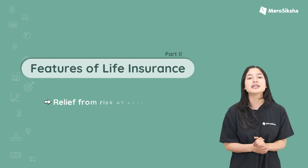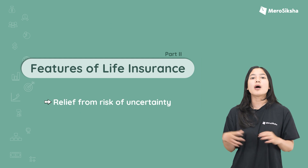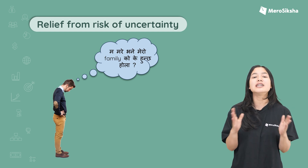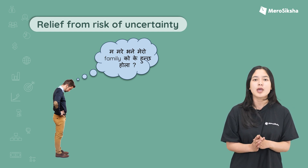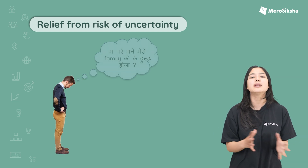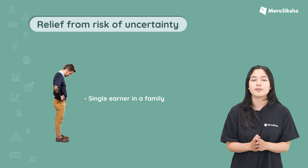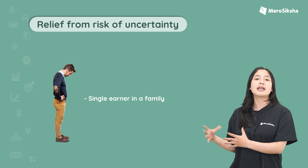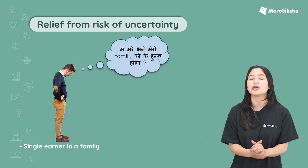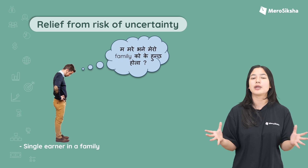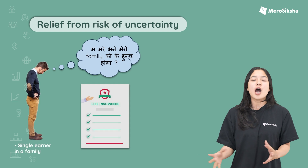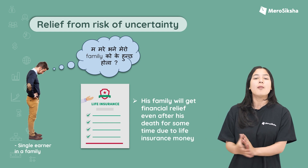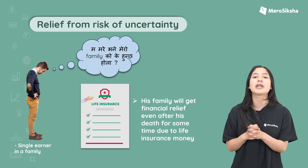We have another feature: relief from the risk of uncertainty after death. We have to think about what happens to our family when we die, and we have tension, so life insurance helps relieve that tension. For example, taking a single-earner family — if Ram passes away and there is no financial income, life insurance provides safety and security.